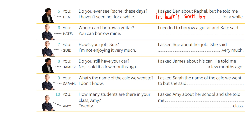Number six: You say, 'Where can I borrow a guitar?' Kay says, 'You can borrow mine.' I needed to borrow a guitar, and Kay said that — 'you can' becomes — I could borrow hers.